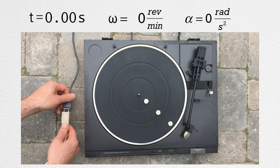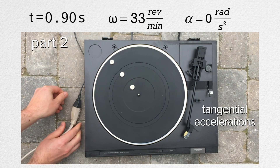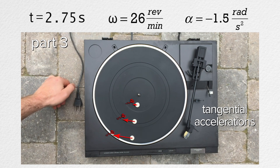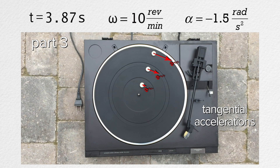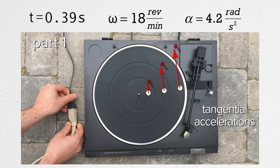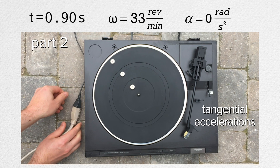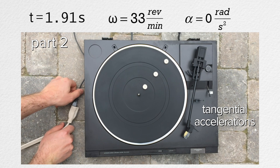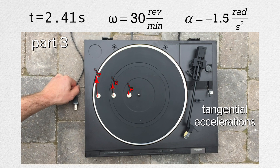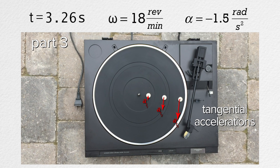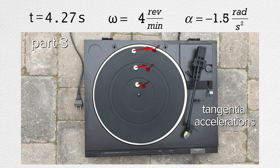Very nice, Billy. Now let's remove the tangential velocities and add tangential acceleration vectors. Bo, please describe what you see when you look at the tangential acceleration vectors. During part one, each mint has a tangential acceleration with a constant magnitude. During part two, the tangential accelerations are all zero. And during part three, each mint has a tangential acceleration which has a constant magnitude and is in the opposite direction to what it was in part one. And their magnitudes are smaller.